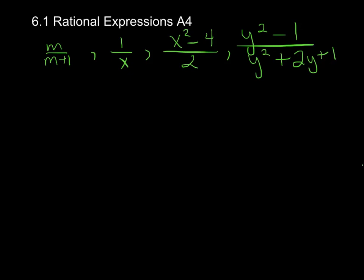In this first one, what's going to make the denominator 0? We have to think. Well, if suppose M was equal to negative 1, that's going to make 0 in the denominator. So we don't want M to equal negative 1 for that one.